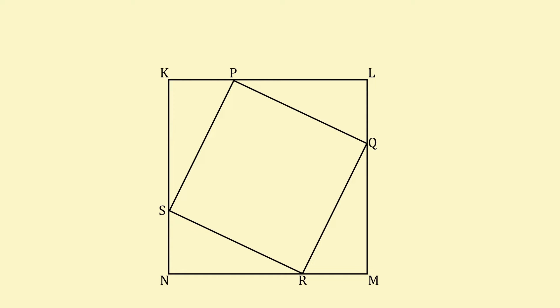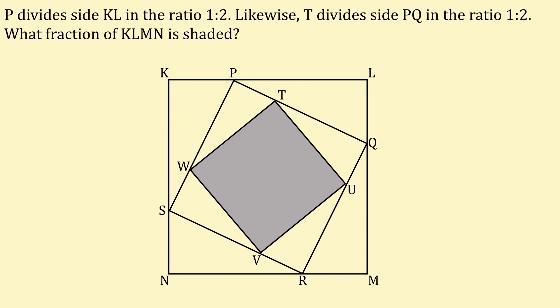And within this square is square TUVW. Point P divides the side KL in the ratio 1 to 2. Likewise, point T divides the side PQ in the ratio 1 to 2. What fraction of KLMN is shaded?